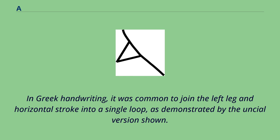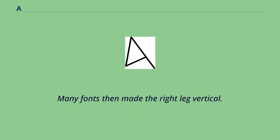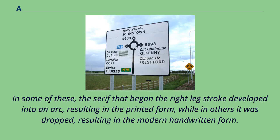In Greek handwriting, it was common to join the left leg and horizontal stroke into a single loop, as demonstrated by the uncial version shown. Many fonts then made the right leg vertical. In some of these, the serif that began the right leg stroke developed into an arc, resulting in the printed form, while in others it was dropped, resulting in the modern handwritten form.